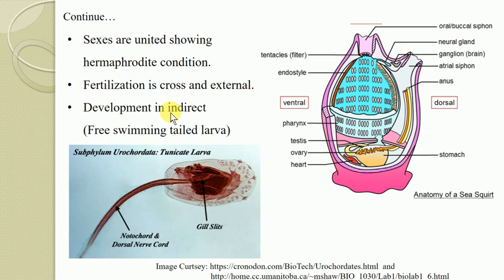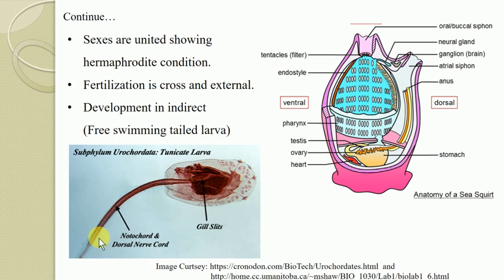The development of Urochordates is indirect, always passing through certain larval stages. The larva found in Urochordates is free-swimming and provided with a tail. This free-swimming tailed larva is a characteristic feature of Urochordates, having the Notochord and Nerve Chord only at the larval stage, restricted to the tail.